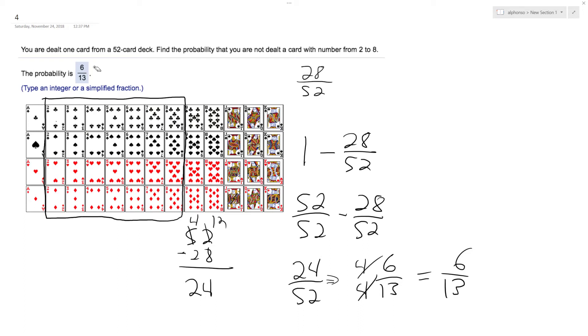So 1 minus 28 over 52, and then that's how you get 24 over 52, which reduces down to 6 over 13. Alright, thank you.